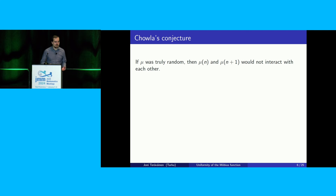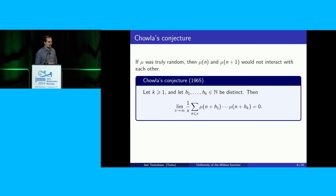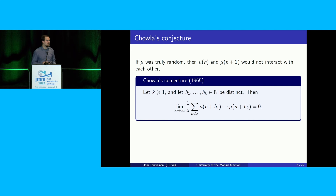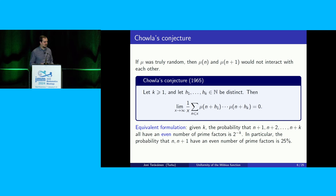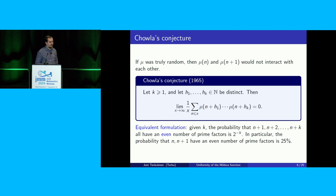Chowla's conjecture, as I said, is about the independence of consecutive values of the Möbius function. More generally, you can take any k number of values and look at the values of the Möbius function at n plus h_1 up to n plus h_k — these should be independent of each other. An equivalent probabilistic way to state this: for any given k, the probability that all of n plus 1 up to n plus k have an even number of prime factors should be 2 to the minus k.